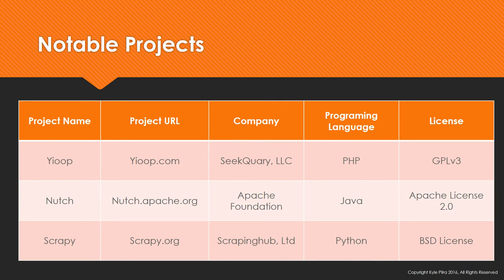If you want to take a look at some web crawlers and see what other people have done, here are some examples I've used in the past: Yelp, which is a web crawler written in PHP; Nutch, which is written in Java by the Apache Foundation; and Scrapy, which is a Python web crawler. All of these are open source, so you can peek inside and see what they're doing and how they're doing it.